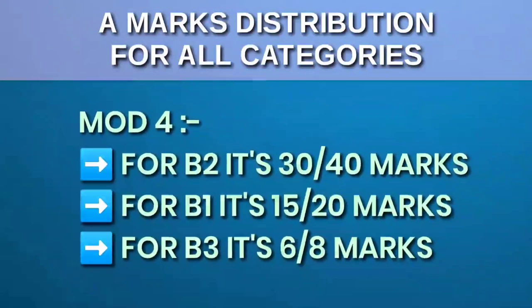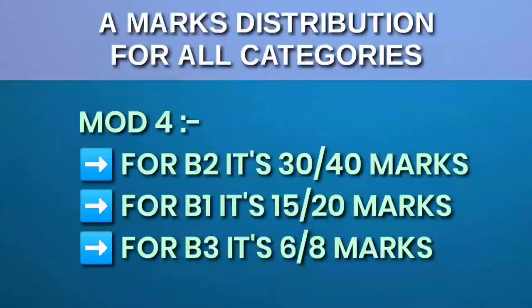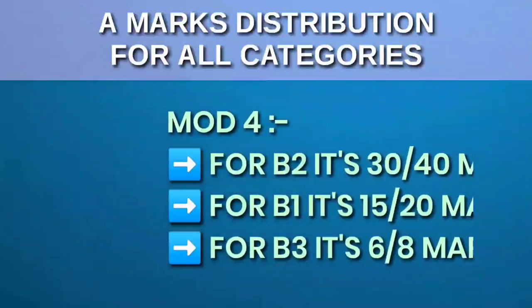Module 4: for B2, it's 40 marks and you need 30 marks for clearing. For B1, it's 20 marks and you need 15 marks for passing. For B3, it's 8 marks only and the passing mark is 6.